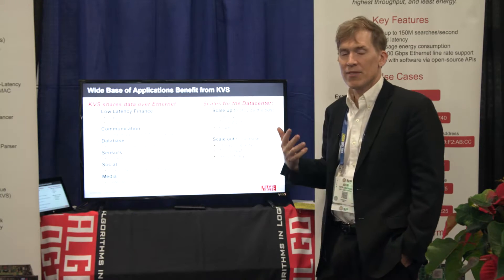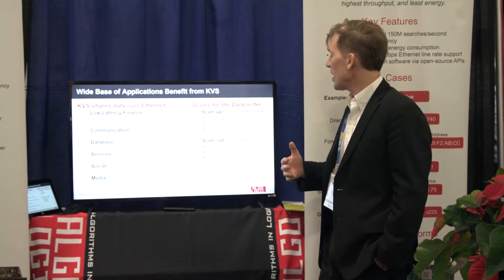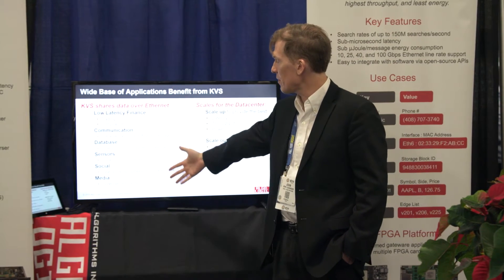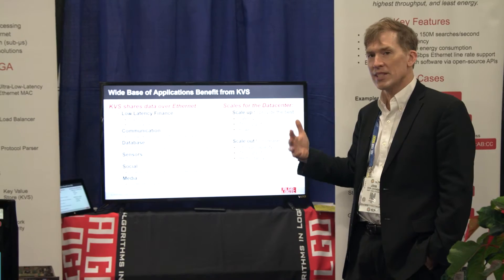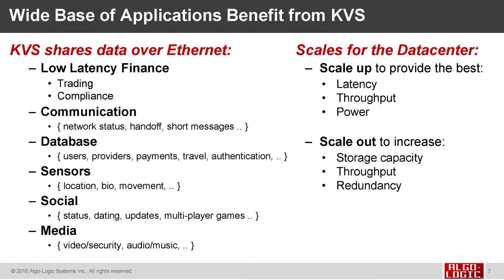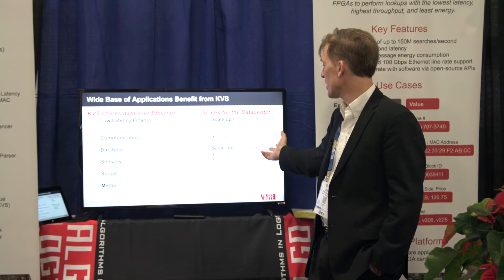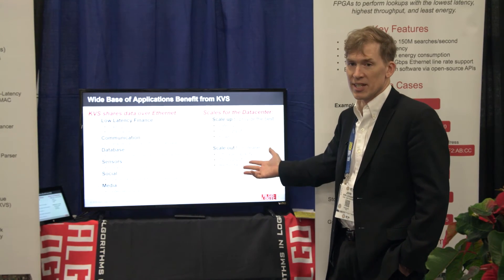All these applications benefit from key value stores because each has a need to make associations of key value pairs. When implementing these applications in the data center, you want the best latency, throughput, and power. The FPGA key value store scales performance by minimizing latency, scaling throughput to tens of gigabits up to 100 gigabits per second, and reducing power consumption. For larger systems, you can simply scale out to get more capacity, more throughput, and redundancy so data is never lost.